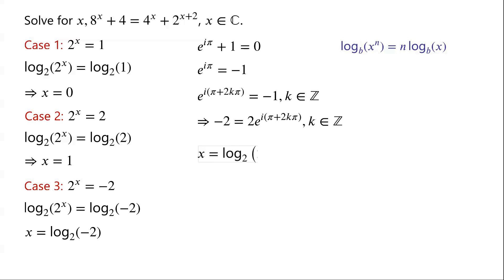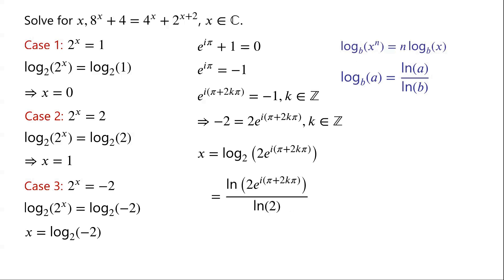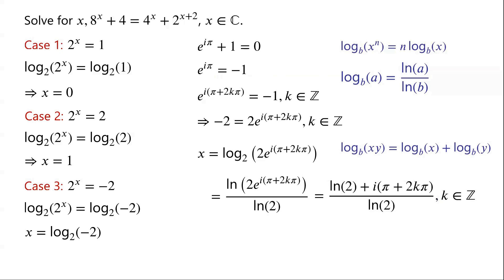Therefore x equals log base 2 of 2 times e to the power of i times (pi plus 2k pi). Using the change of base formula, log base b of a equals ln(a) over ln(b), we can write x equals ln of [2 times e to the power of i(pi plus 2k pi)] over ln(2). Applying the log product rule, the numerator becomes ln(2) plus ln of e to the power of i(pi plus 2k pi), which equals ln(2) plus i(pi plus 2k pi). Thus x equals [ln(2) plus i(pi plus 2k pi)] over ln(2), where k is an integer.